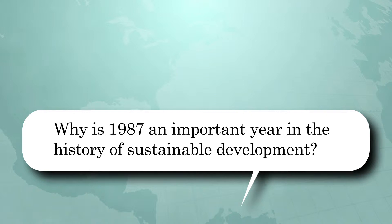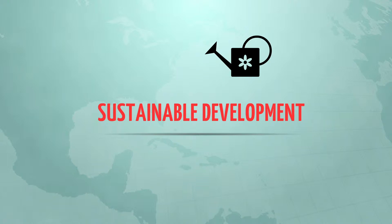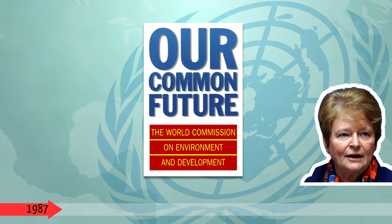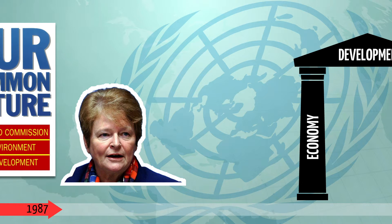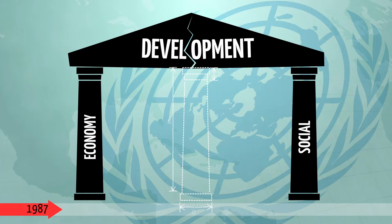Why is 1987 an important year in the history of sustainable development? The attention to the theme of sustainable development is comparatively young, and it wasn't a widespread political agenda item in the early days. You can consider the 80s as the starting point, when the UN published the report Our Common Future under the supervision of Gro Harlem Brundtland. The world community began to realize that development based on the pillars — economic and social — has its limitations. Sustainability is crucial, and environmental considerations have to be taken into account.